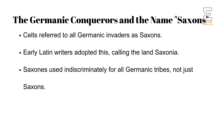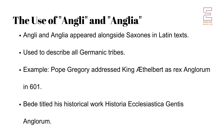The Celtic inhabitants of Britain referred to their Germanic conquerors as Saxons indiscriminately, largely because they first encountered these invaders through raids conducted by the Saxons along the coast. Early Latin writers adopted this term and frequently referred to the inhabitants of the land as Saxons and the territory as Saxonia. However, these names did not exclusively refer to the Saxon tribe but rather to all Germanic tribes that invaded Britain, including the Angles and Jutes.